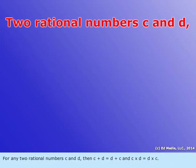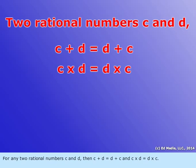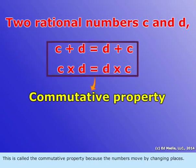For any two rational numbers c and d, c plus d equals d plus c, and c times d equals d times c. This is called the commutative property because the numbers move by changing places.